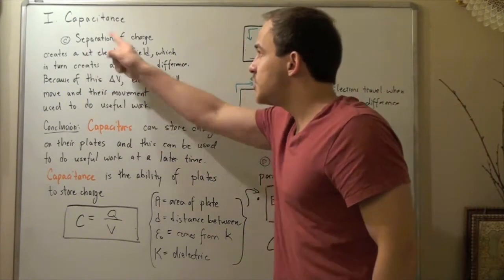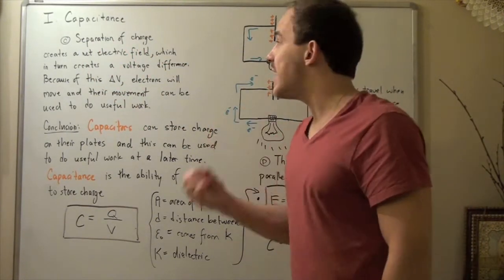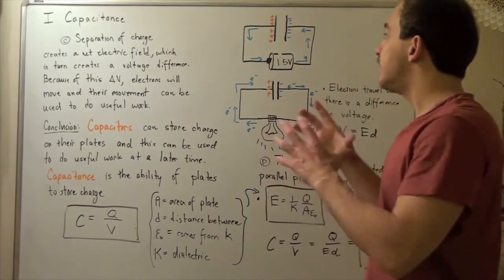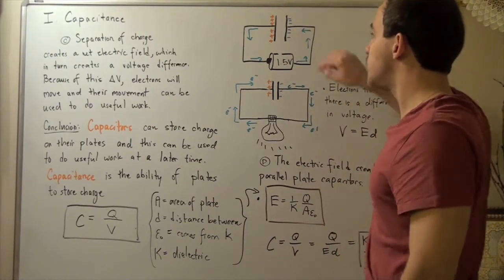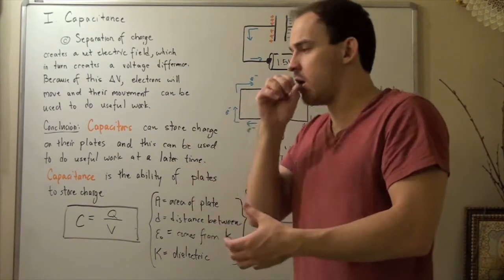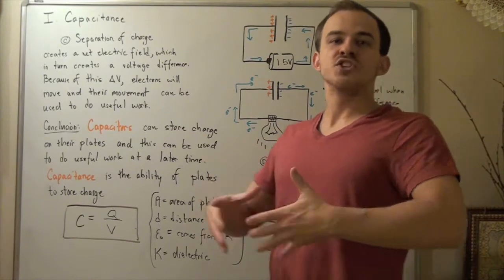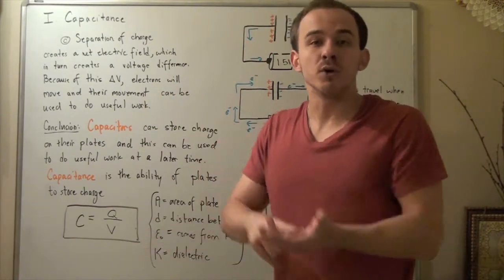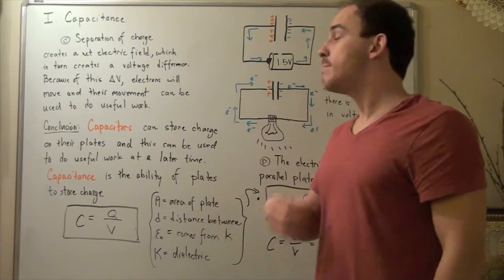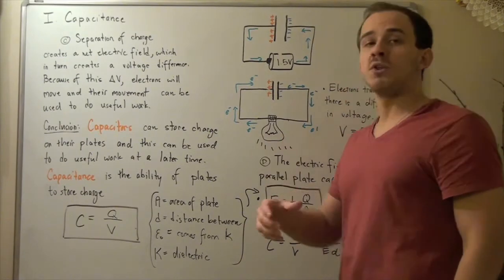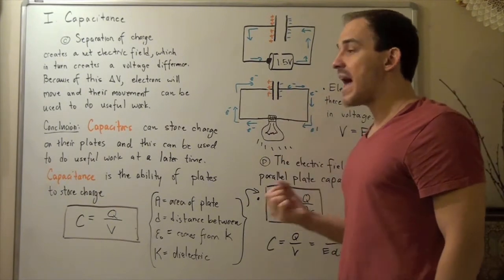Separation of charge creates a net electric field between the two plates, which creates a difference in voltage. This voltage difference propels electrons to move from the higher voltage to the lower voltage. The movement of electrons creates useful electrical work, which can be converted into thermal energy or mechanical work — for example, when powering a motor instead of a light bulb.